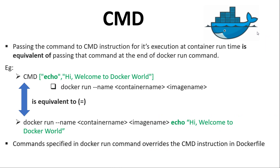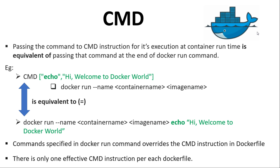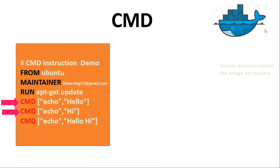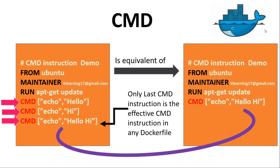Coming to the last and very important point: there is only one effective CMD instruction per Dockerfile. This means that if more than one CMD instruction is written in a Dockerfile, only the last CMD instruction will be executed and the others will be ignored — all earlier CMD instructions are overwritten by the last one. With this we have seen the usage of the Dockerfile CMD instruction, how it differs from RUN instruction, and the two ways of executing commands at container startup. Let us stop this session here and continue with other Dockerfile instructions in the next session. See you in the next session, take care, bye bye.